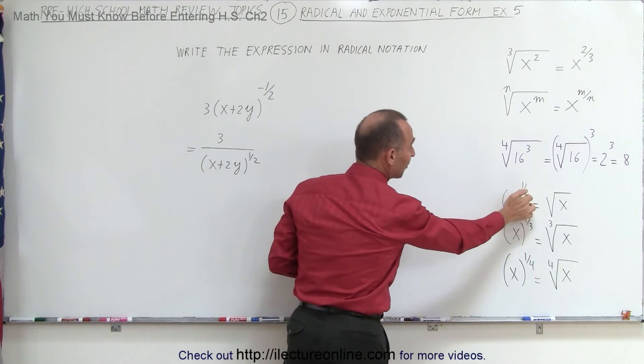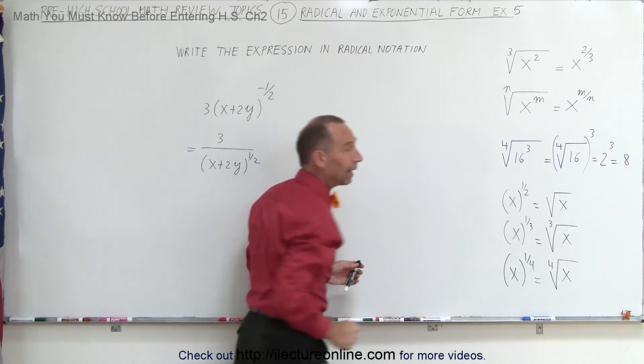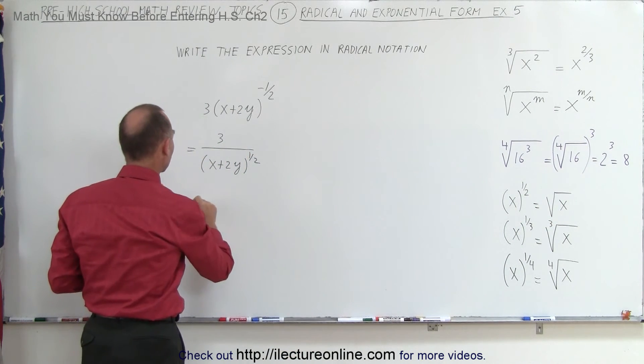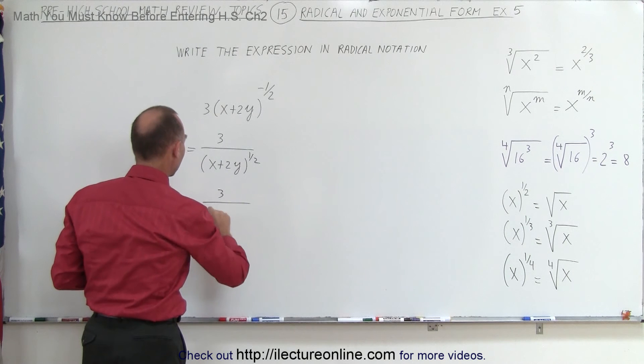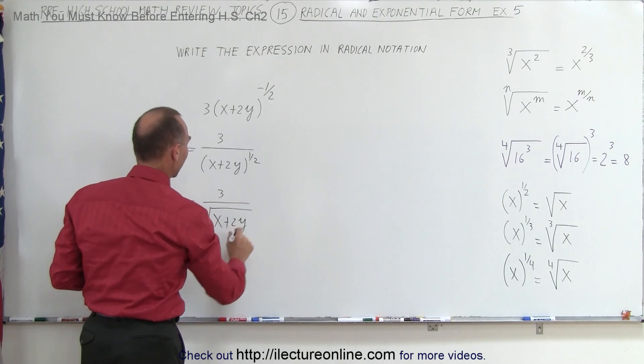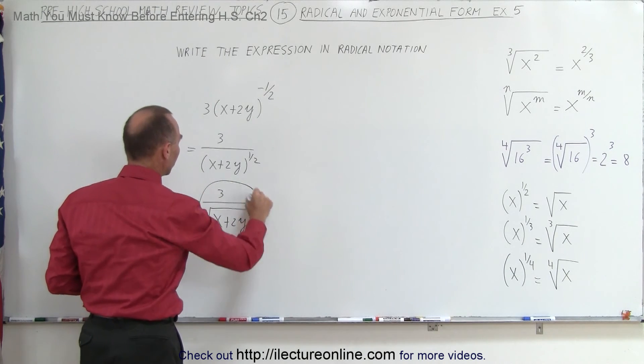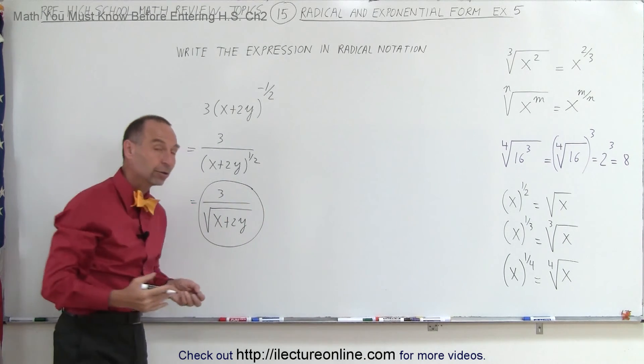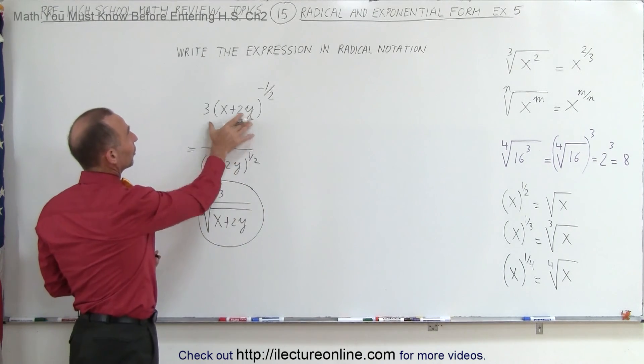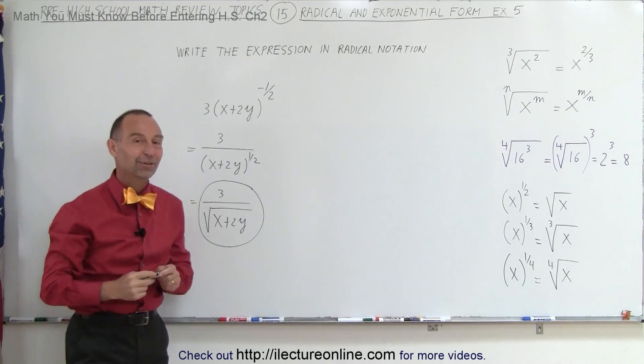Anything raised to the 1 half power is simply the square root of that using a radical symbol. So this can be written as 3 divided by the square root of x plus 2y. And that would then be the final form in terms of radical notation from the original form, which was an exponential notation. And that's how it's done.